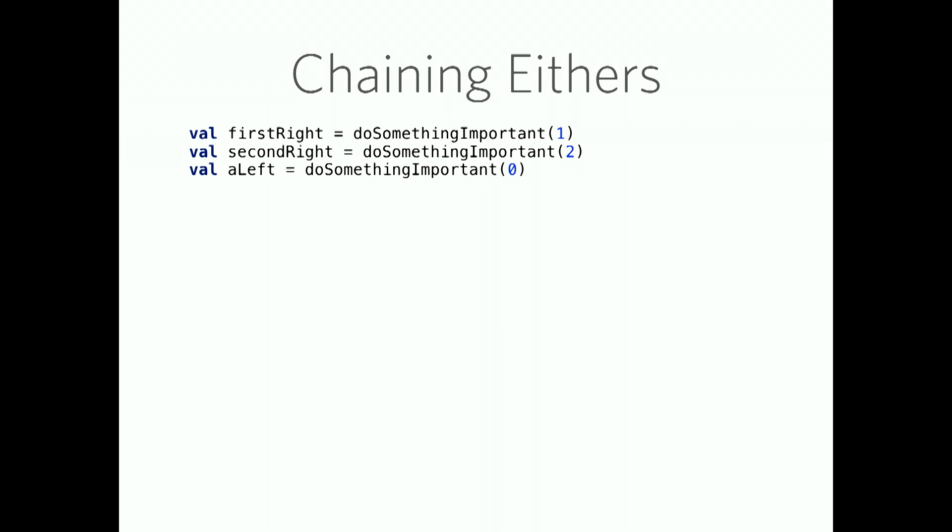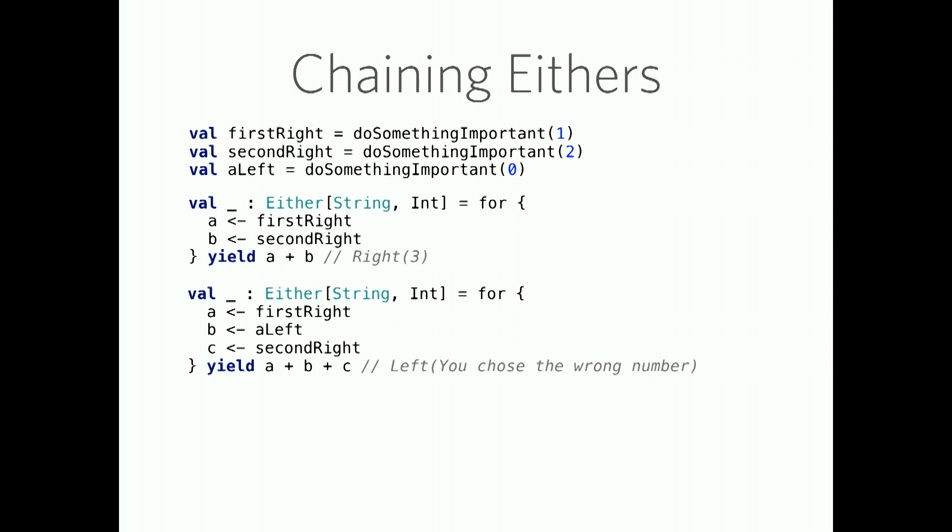When doing multiple calls, you can chain them in for comprehensions like this as well. If a left pops up, you're going to fail fast and stop evaluating on the value of that either. This makes sense if you think about it because if you were to get a left, say in this example, and we're trying to add a bunch of integers together, you wouldn't have an integer to add together in this case. So you'd be unable to carry out that yield.